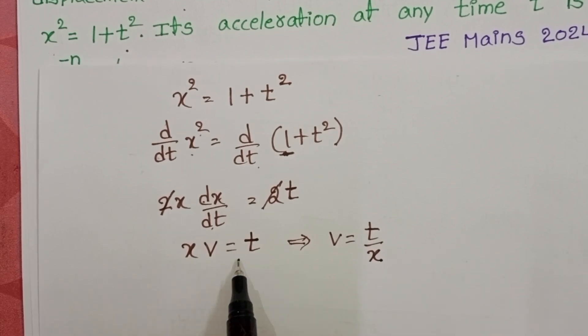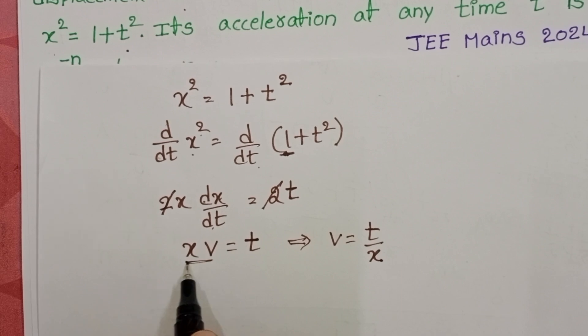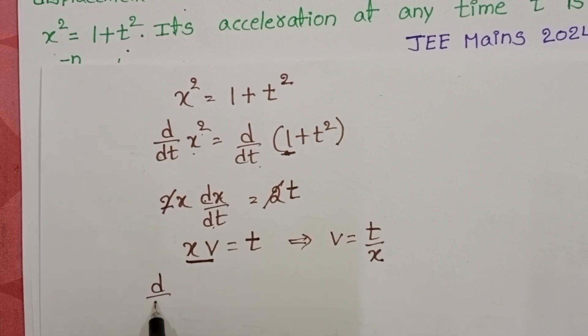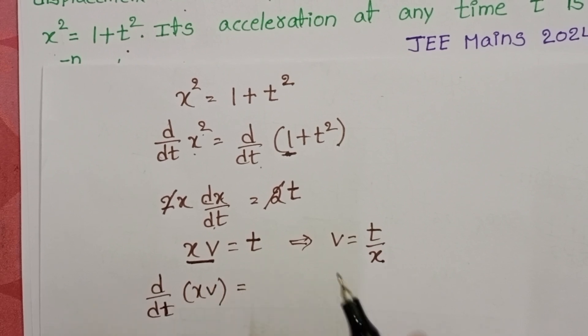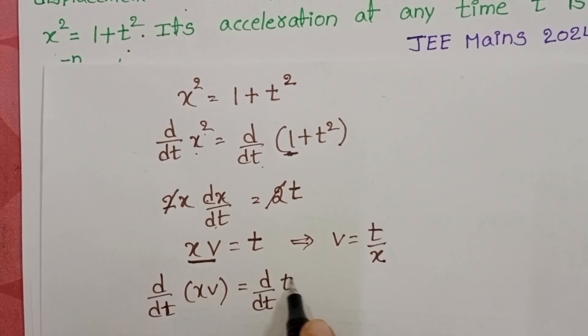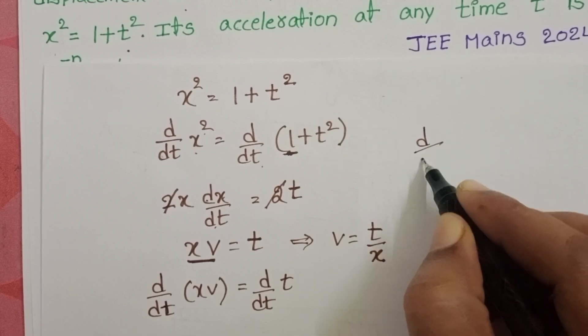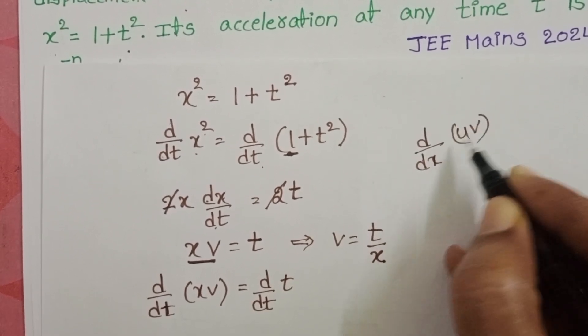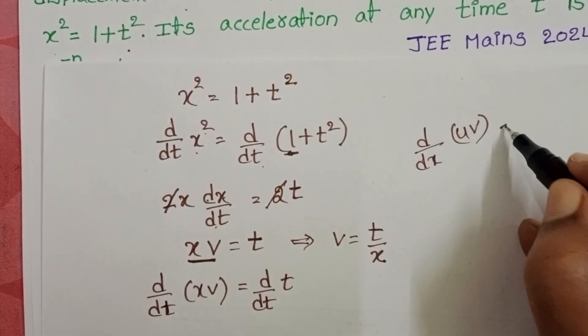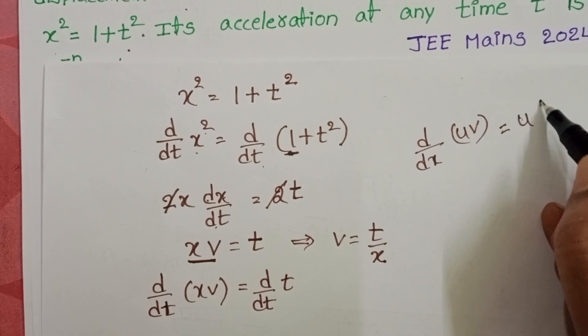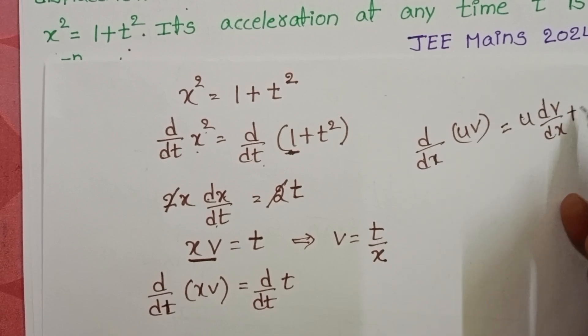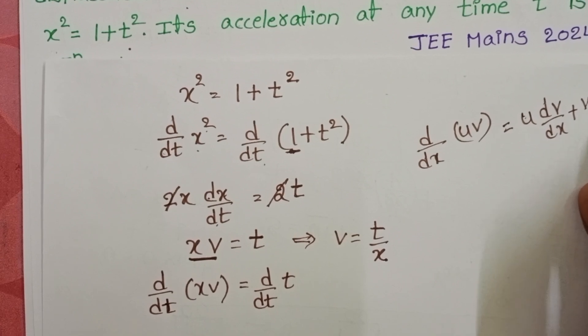Once again differentiate this equation on both sides with respect to time, then only we get acceleration. Rate of change of velocity is called acceleration. But here two terms are there. d/dt of xv equals d/dt of t. We know d/dx of uv: differentiation of product of two terms equals u dv/dx plus v du/dx.